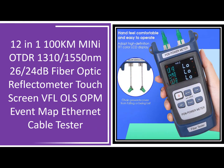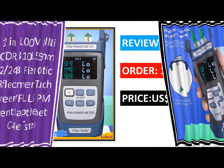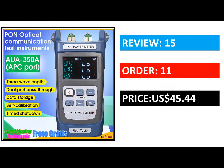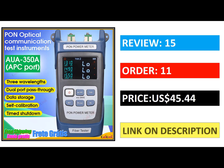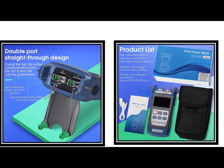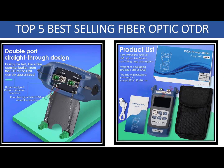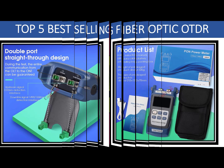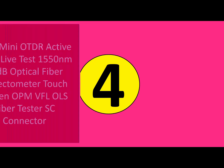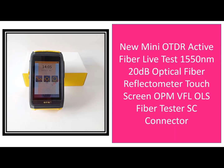An optical spectrum analyzer (OSA) is a device used to analyze the wavelength of light coming back from a fiber optic cable. An OSA takes light samples at regular intervals and determines what wavelengths are present in the sample. By comparing the wavelengths of the light sample to the wavelengths of known light, the type of fiber optic cable being tested can be identified.